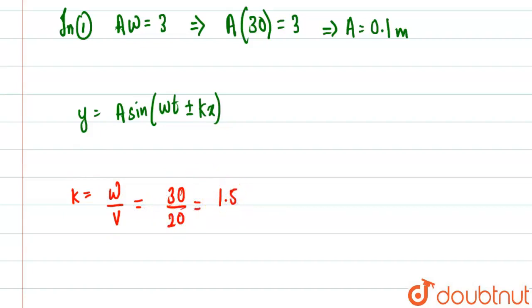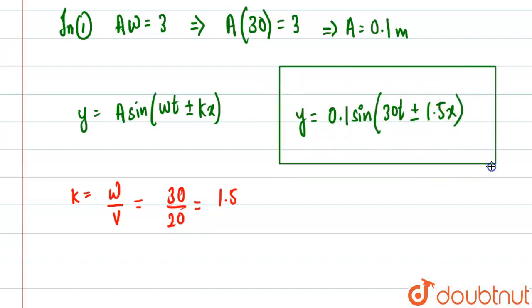So basically from here if we put the values, y will be equal to 0.1 sine 30t plus/minus 1.5x. So basically this is the final waveform that is found, and this is our required answer.